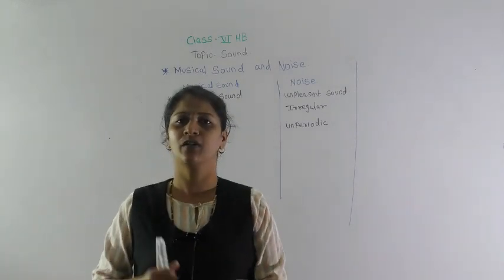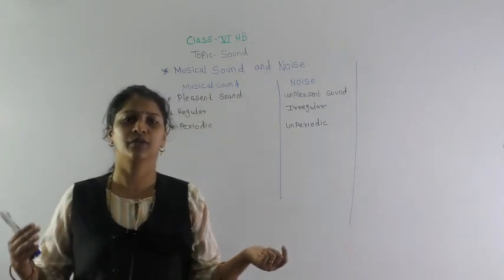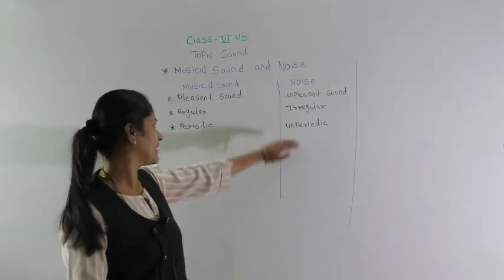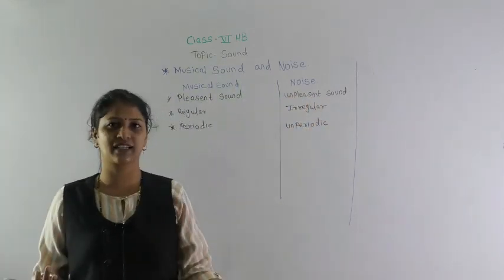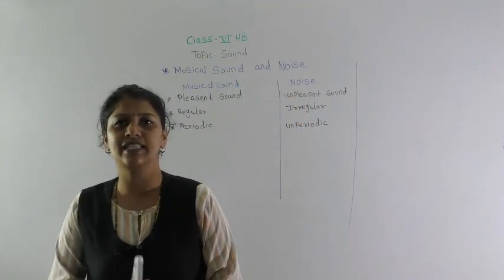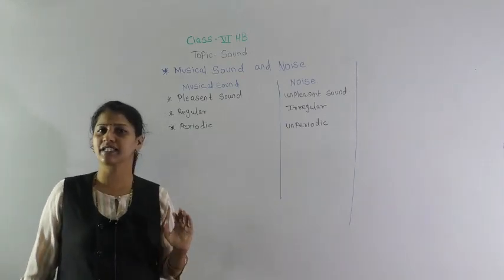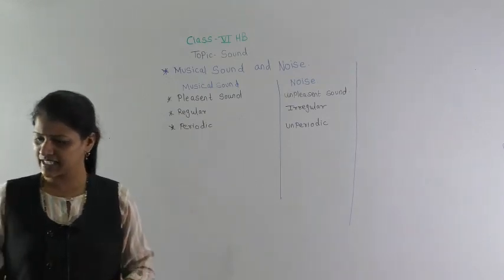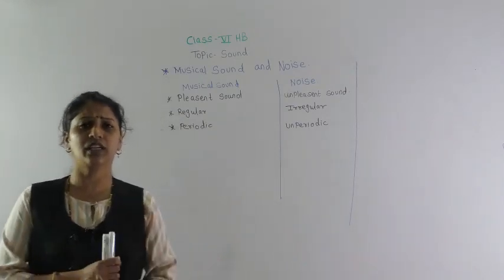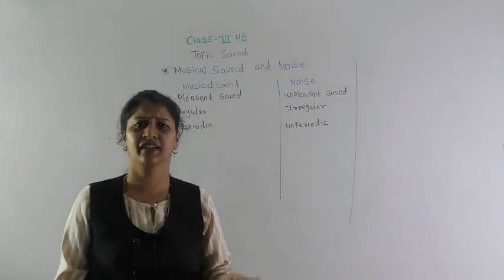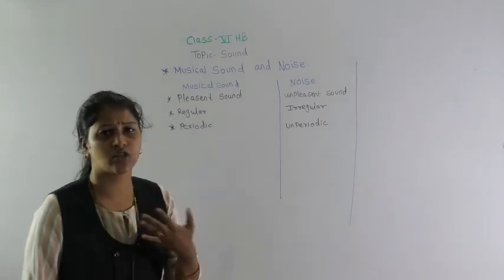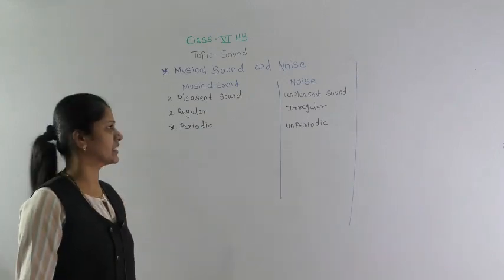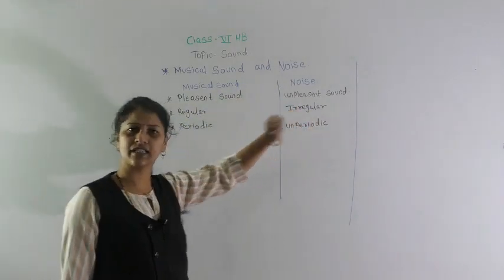For example, a musical instrument is something we can hear for a longer period of time. Noise is nothing but unpleasant sound, which we cannot comfortably hear. For example, the sound of a moving car or the continuous horn of a bike — we feel it is unpleasant to our ear. That is called unpleasant sound.